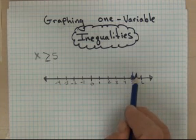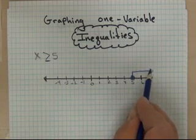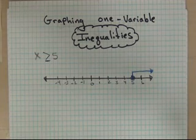And all the numbers that are greater than 5 are this direction on the number line. And so this is how we show all numbers greater than or equal to 5.